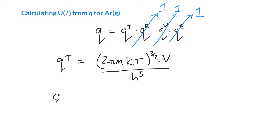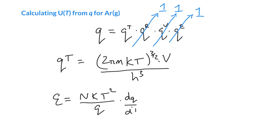The expression for energy, which we can get from the partition function, is N k T² over Q, times the derivative of Q with respect to T. So we really need to be able to calculate the derivative of Q, which is just the translational partition function.